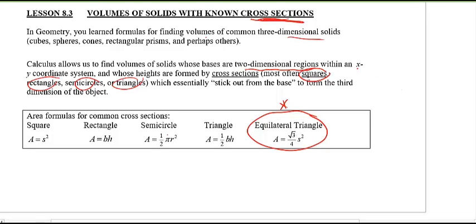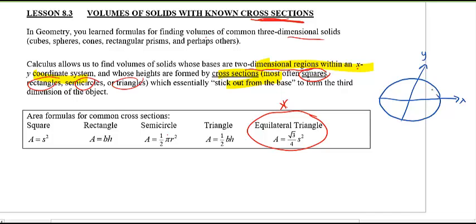Before I move on, I want to show what I mean by a two-dimensional region in the xy coordinate system with a cross section sticking out from the base. I'm going to try to draw a three-dimensional shape on a two-dimensional piece of paper. I'll draw a 2D region, and then draw rectangles sticking out of the page to make it three-dimensional. I create all these rectangles that come out from the base of my 2D region, and if I add them all up, I get the actual volume.